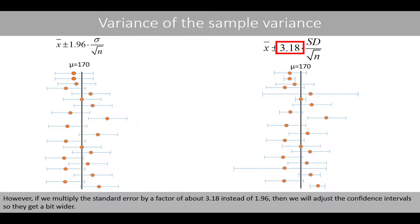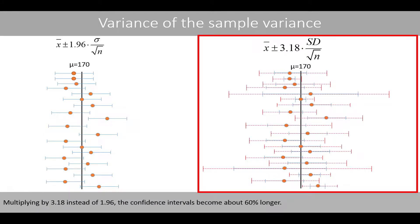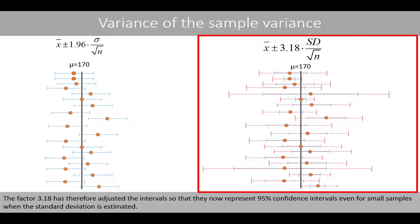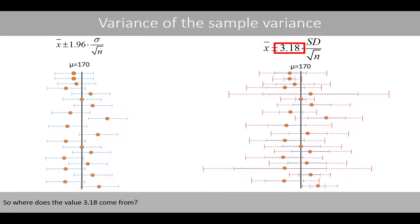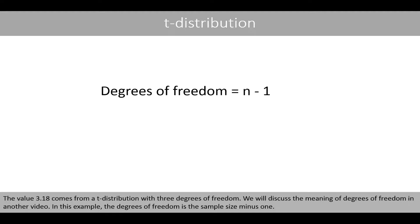Our intervals will therefore not represent 95% confidence intervals because less than 95 out of 100 intervals will include the true population mean. However, if we multiply the standard error by a factor of about 3.18 instead of 1.96, then we will adjust the confidence intervals so they get a bit wider. Multiplying by 3.18 instead of 1.96, the confidence intervals become about 60% longer. We now expect that these new and longer intervals cover the true population mean 95 out of 100 times. The factor of 3.18 has therefore adjusted the intervals so they now represent 95% confidence intervals even for small samples when the standard deviation is estimated. We see that only 1 out of the 20 intervals does not include the true population mean. So, where does the value of 3.18 come from? The value of 3.18 comes from a t-distribution with 3 degrees of freedom. We will discuss the meaning of degrees of freedom in another video. In this example, the degrees of freedom is the sample size minus 1.